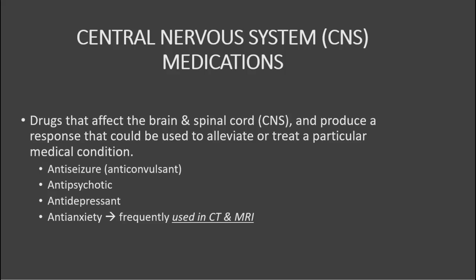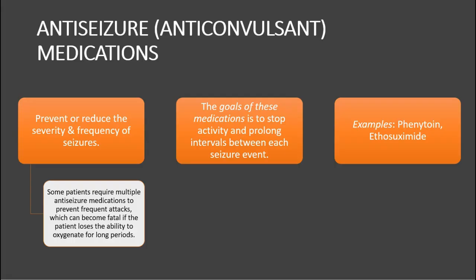CNS medications are drugs that affect the brain and spinal cord and produce a response used to alleviate or treat a particular condition. Subclasses include anti-seizure, anti-psychotic, anti-depressive, and anti-anxiety. Anti-convulsants should prevent or reduce the severity and frequency of seizures. Some patients require multiple anti-seizure medications to prevent frequent attacks, which can become fatal if the patient loses the ability to oxygenate for long periods. The goal is to stop activity and prolong intervals between each seizure event.